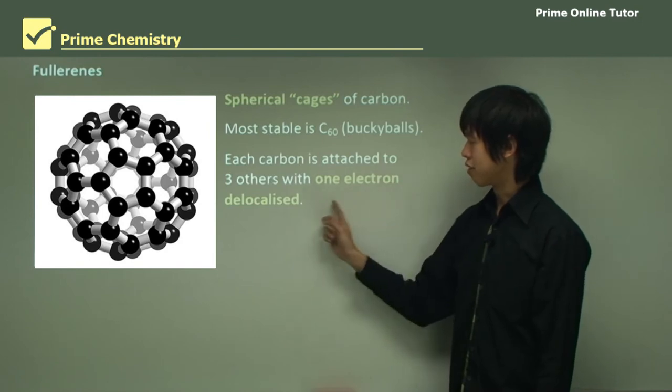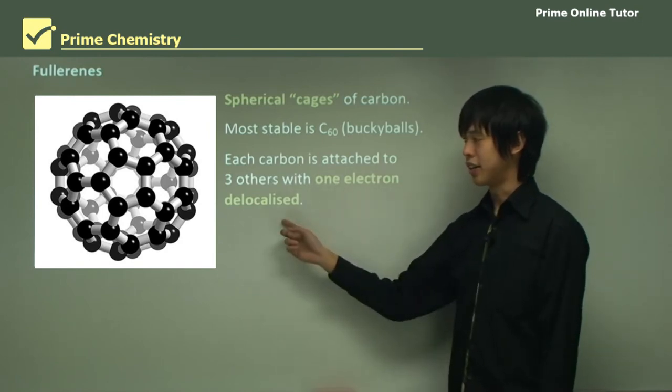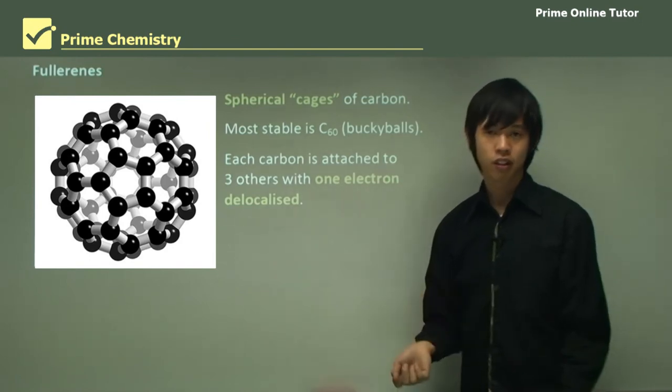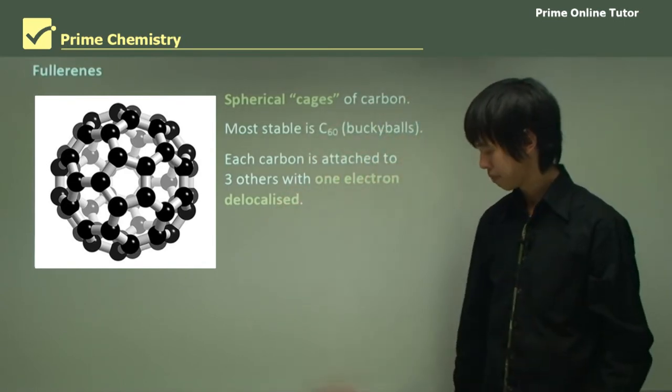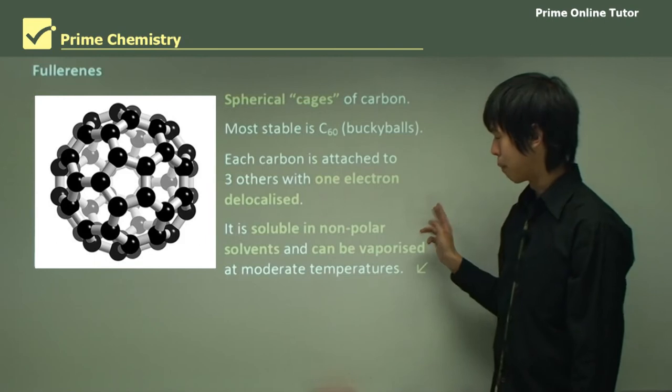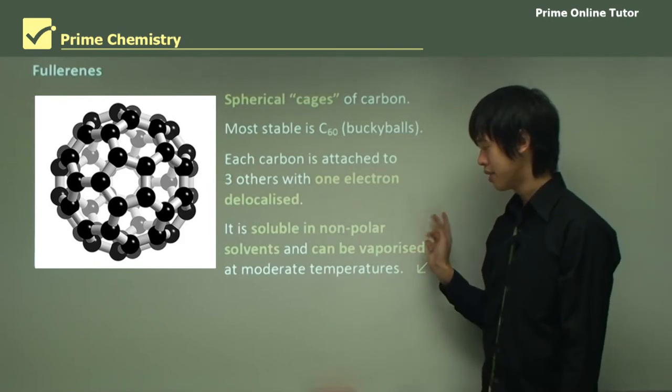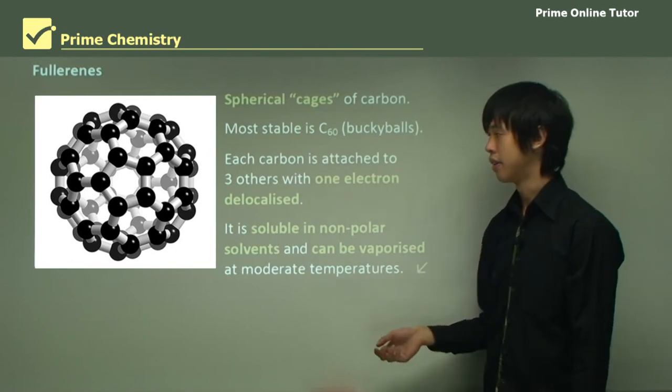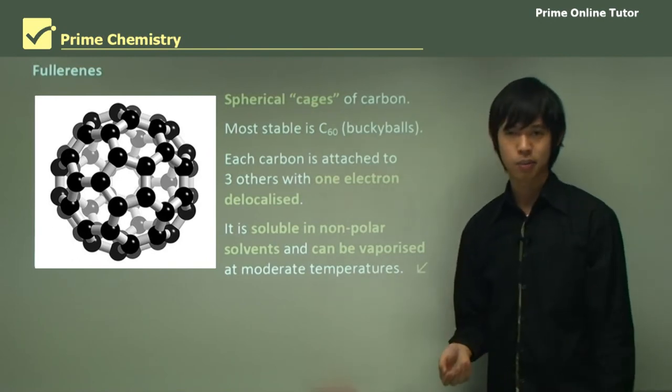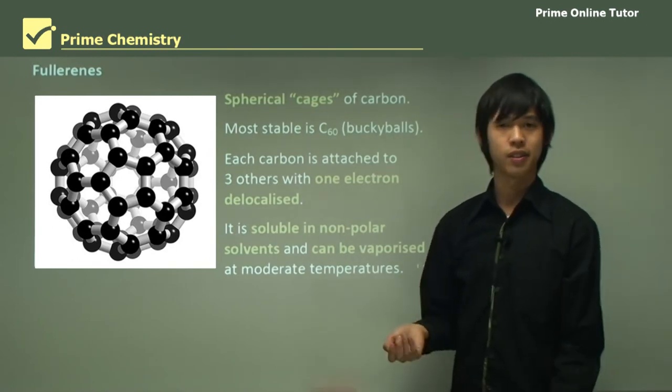Each carbon is attached to three others with one delocalised electron. So similar to graphite, except instead of planes, we have these little ball structures. It's soluble in nonpolar substances and can be vaporized at moderate temperatures. Fullerenes are quite an interesting substance and they are starting to find use in industry.